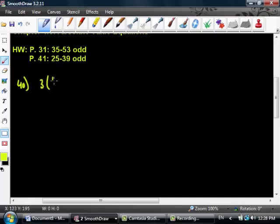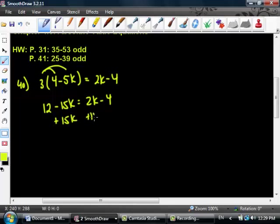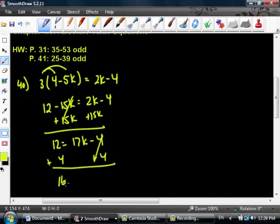3 times quantity 4 minus 5k equals 2k minus 4. Same thing. Variables on both sides, and yet the left side has another layer of stuff. One more layer of inception that you've got to go down. So we are going to do the distributive property. I hope you guys remember that. That is 12 minus 15k equals 2k minus 4. I'm going to add 15k to both sides. 15k. That's going to get out of there. 12 equals 17k minus 4. Add 4 to both sides. We know what we're doing, right? Who can raise your hand and tell us what's the final answer? K equals what? Andres? 16 over 17. Good job.